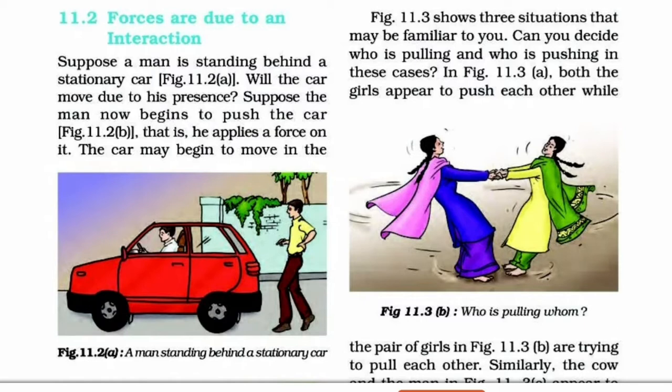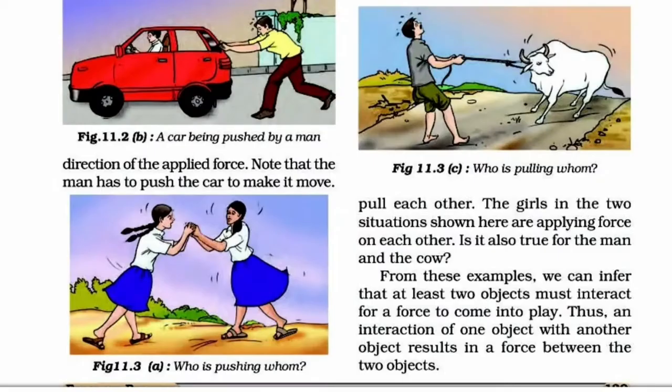From these examples, we can infer that at least two objects must interact for a force to come into play. This is an interaction of one object with another object which results in a force between the two objects.